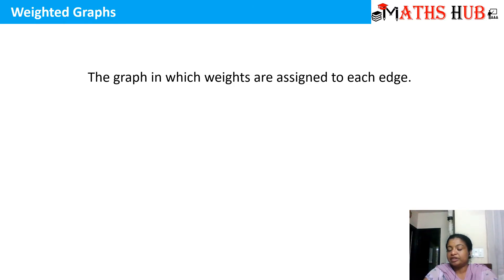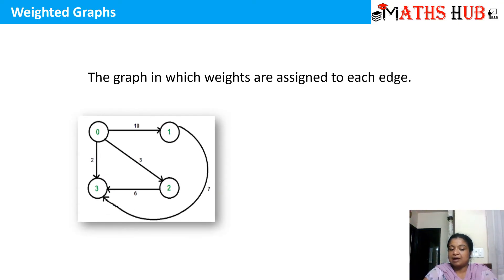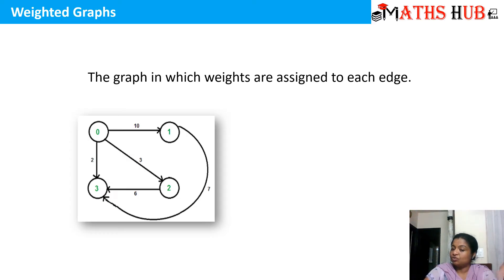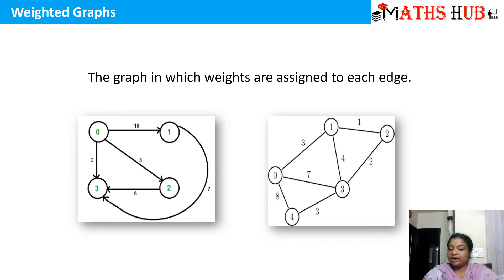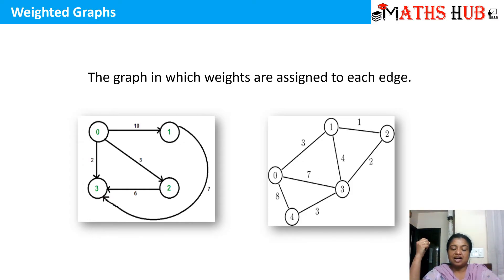Now let's talk about a weighted graph. A weighted graph means that some numbers are associated with the edges. For example, 0, 1, 2, 3 are denoting some cities and the distances between these cities are denoted by numbers — the distance between 0 and 1 is 10, between 0 and 3 is 2, between 2 and 3 is 6, and so on. Weights are numbers assigned to edges so they can be used in algorithms for calculating shortest distances. This applies to both directed and undirected graphs.